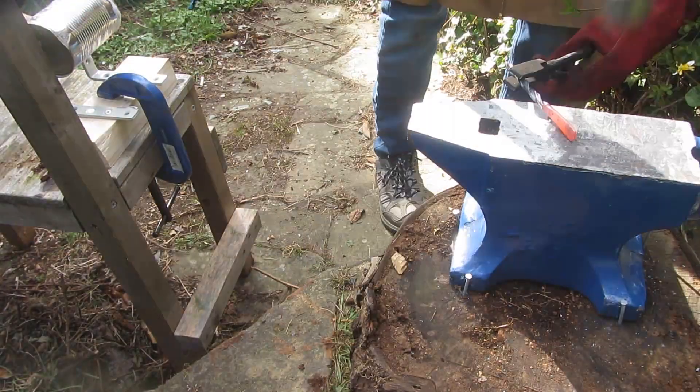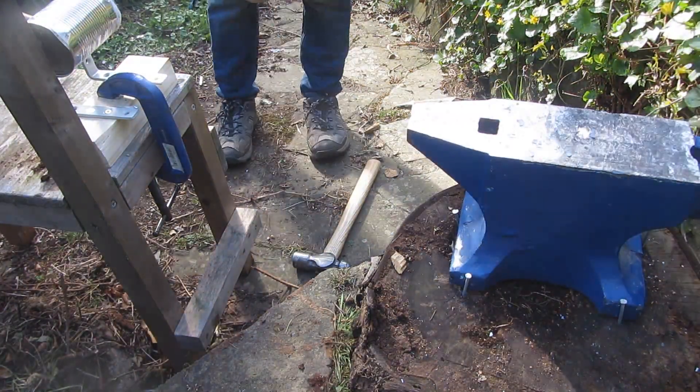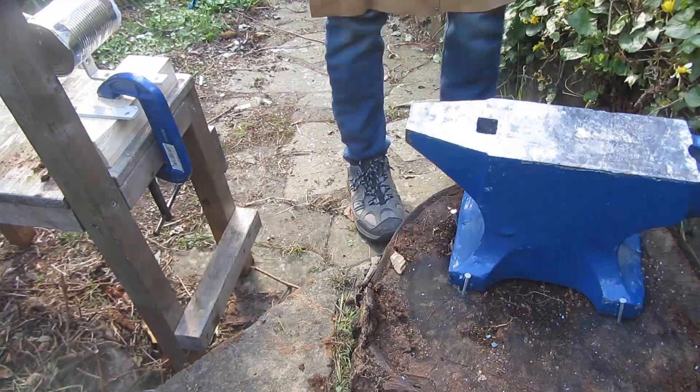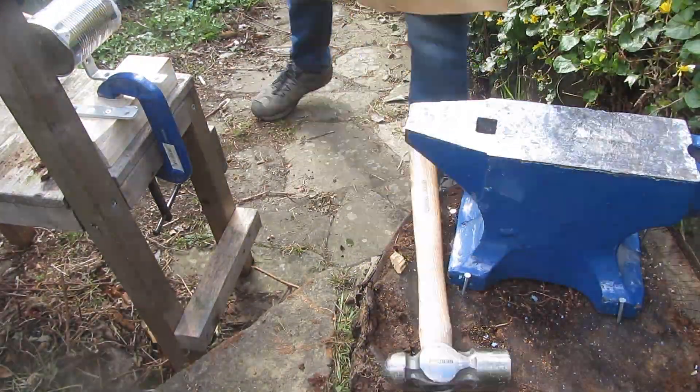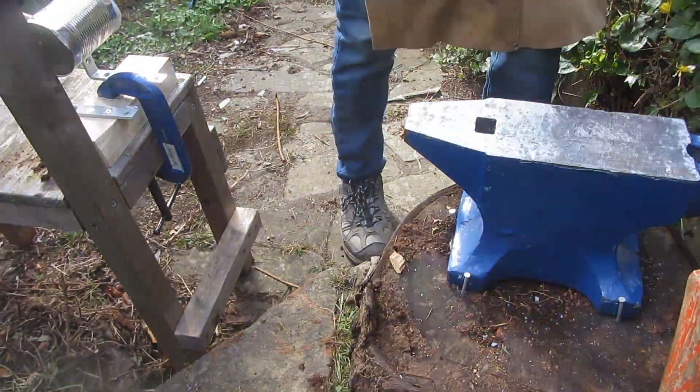So let's get started. Obviously the first step is to start to forge out the knife blade and this is pretty simple. I basically just flatten out the shank of the knife. Also I just want to say you don't actually have to make this from a drill bit, you can pretty much make this from any high carbon steel.